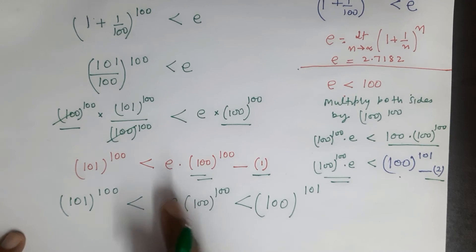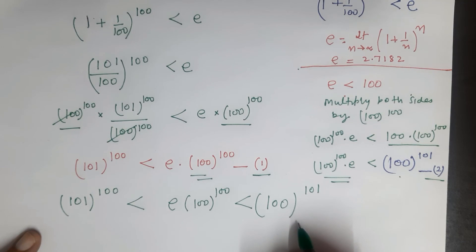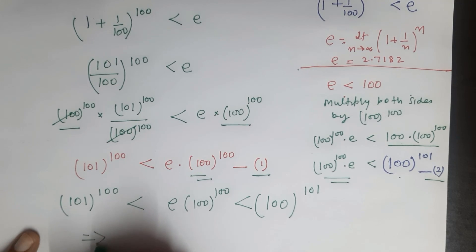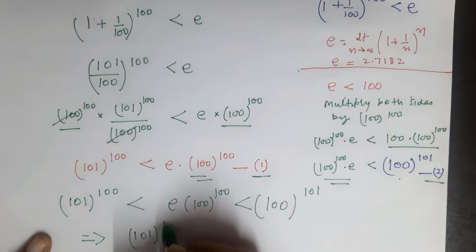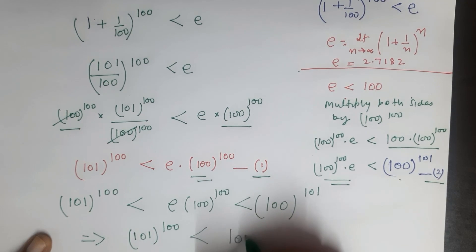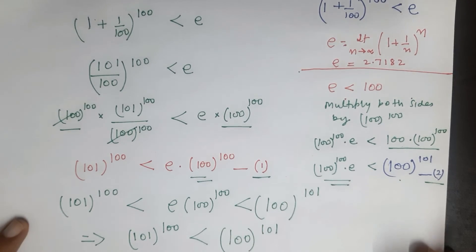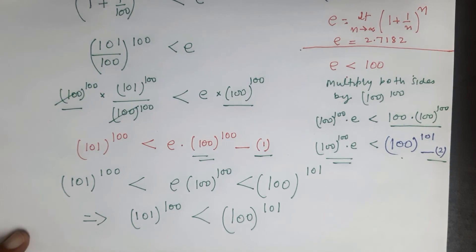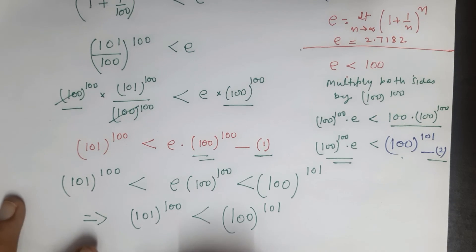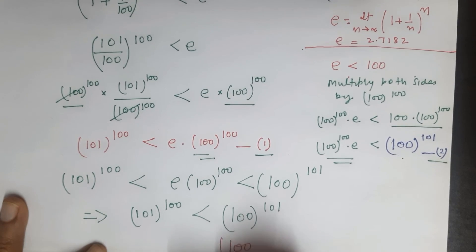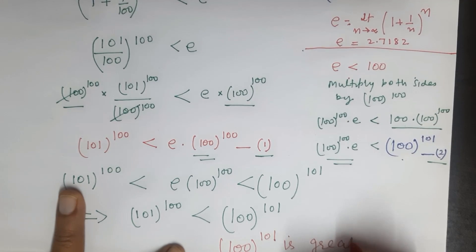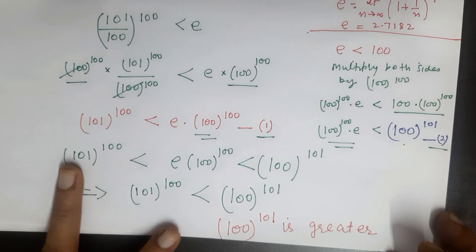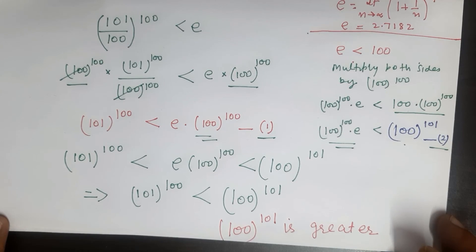If we join both equations, we get: 101 raised to the power 100 is less than e times 100 raised to the power 100, which is less than 100 raised to the power 101. So we conclude that 100 raised to the power 101 is greater. This is the solution.